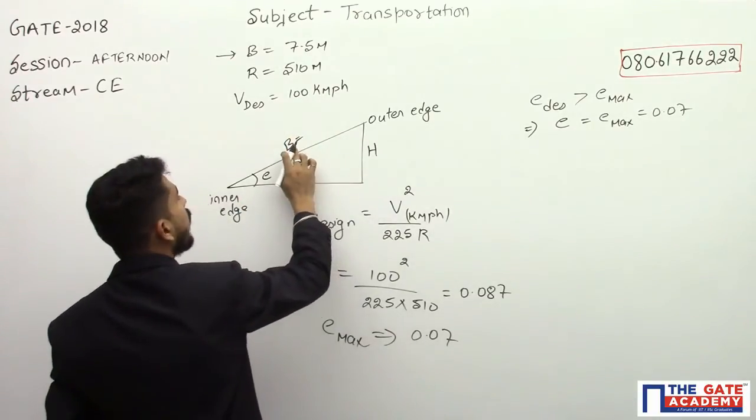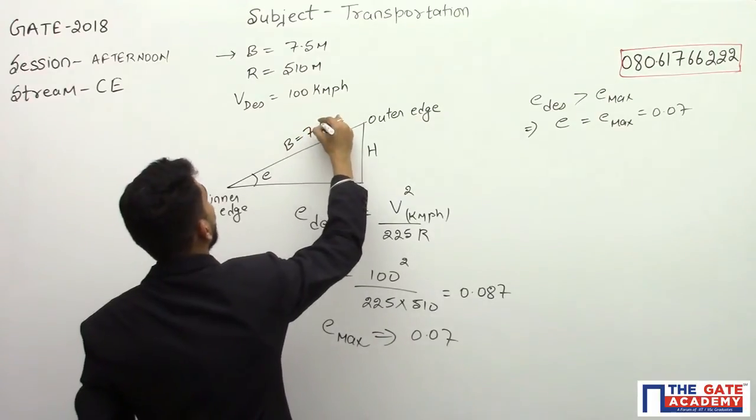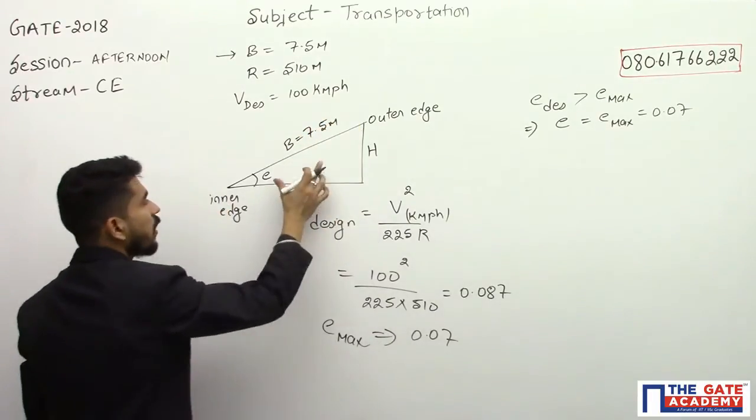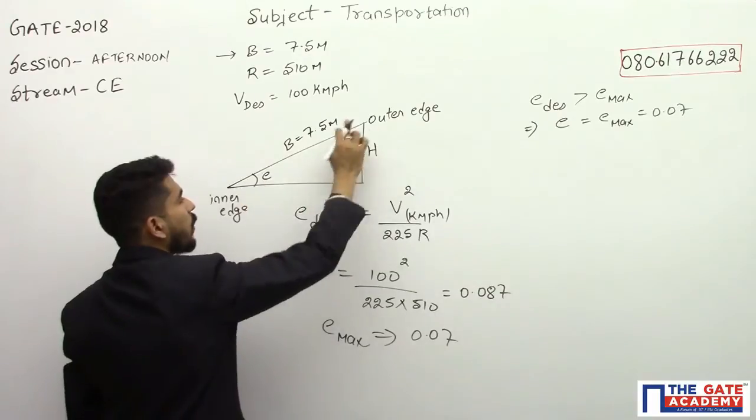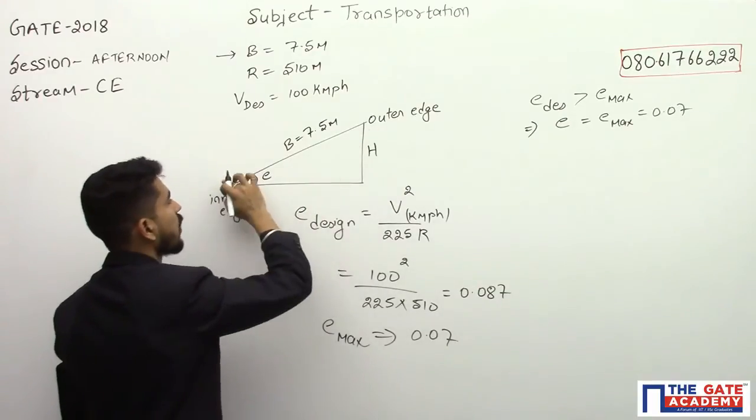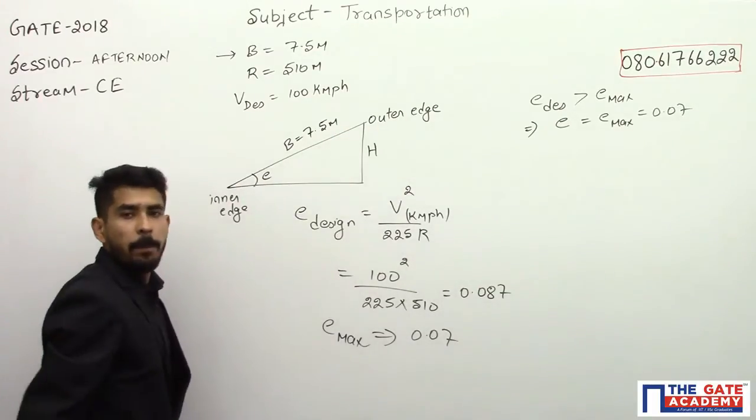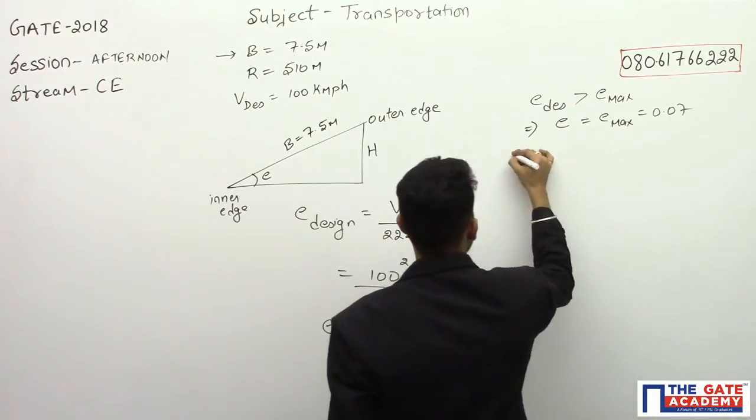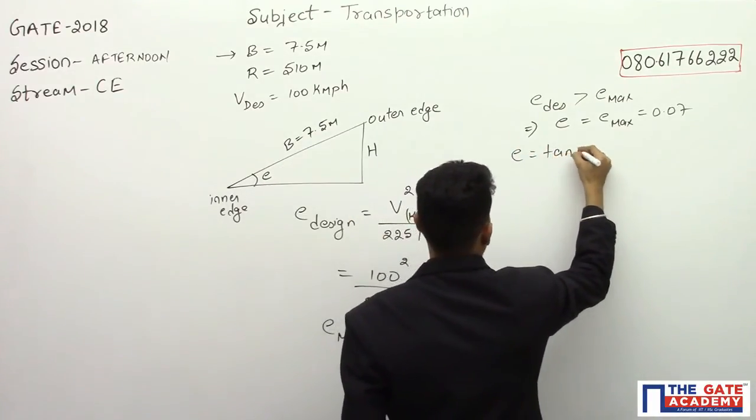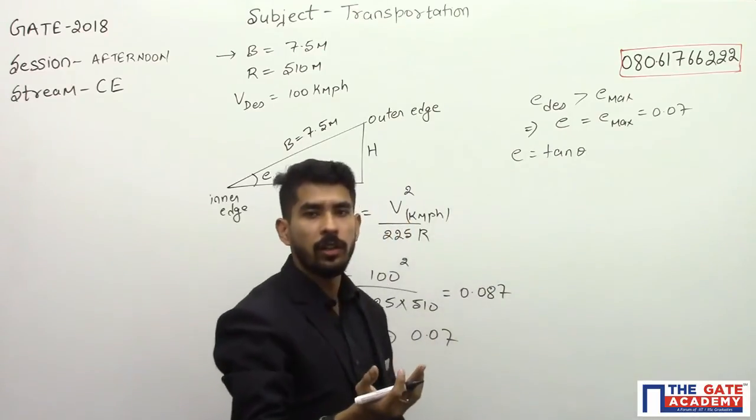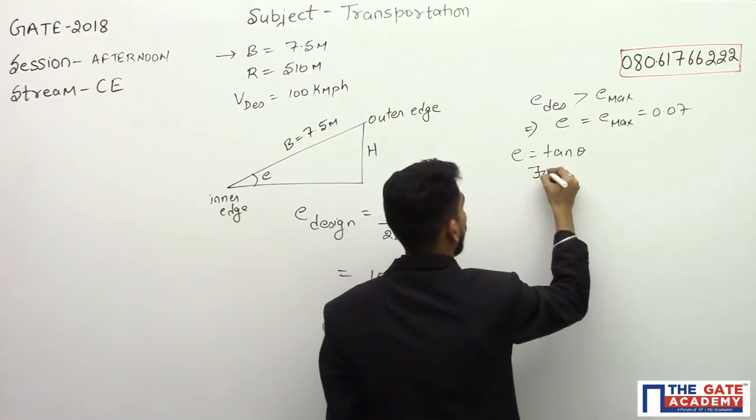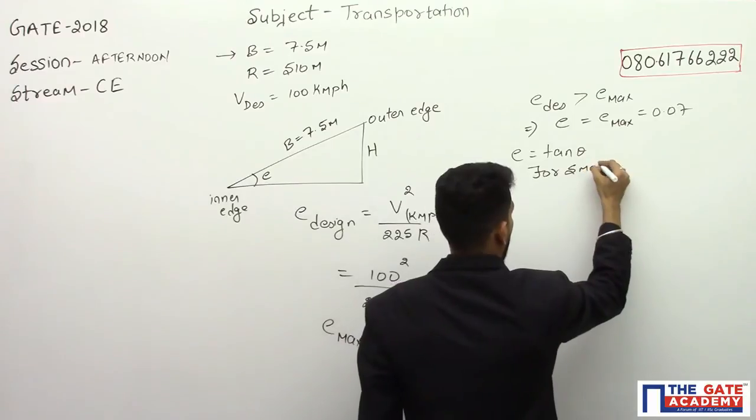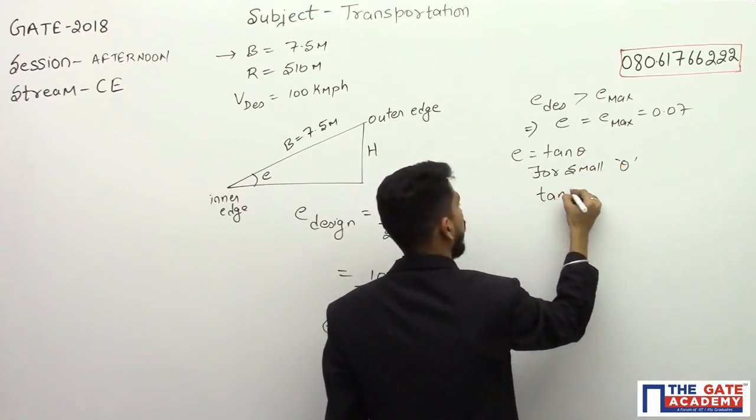Now we have this particular value. B is equal to 7.5 meters. This is the width of the pavement. We know that this value e is nothing but tan θ. For small value of θ, tan θ is almost equal to sin θ.